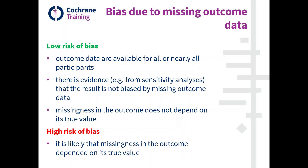Or we might have evidence from sensitivity analyses that investigate the full range of plausible assumptions about what might have happened to the people who are missing, and they show that the result is not biased by the missing outcome data to any important extent. Or we have some reason to believe or evidence that missingness in the outcome does not depend on its true value, because in that situation we won't have any bias.